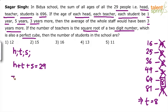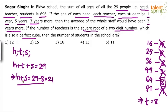So what will be H plus S? H plus S will be equal to 29 minus 8, which is 21. That is one equation: the number of heads plus number of students is 21.